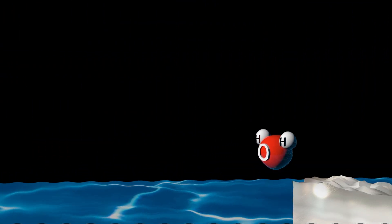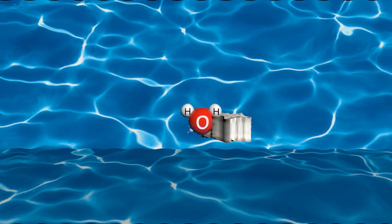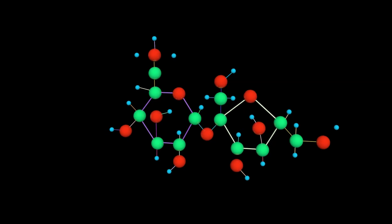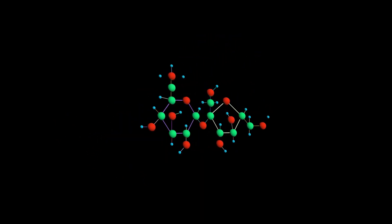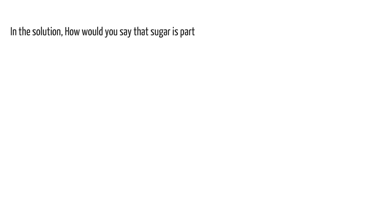During the dissolving process, the water molecules attach themselves to the particles of sugar and enable these particles to separate from the crystal. The sugar crystal consists of ordered and closely packed sugar molecules. A sugar molecule is the smallest unit of sugar that can exist by itself and which has all the properties of sugar. In the solution, how would you say that the sugar is particulate in nature?